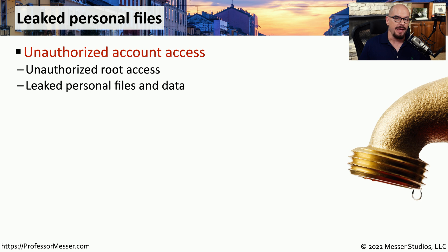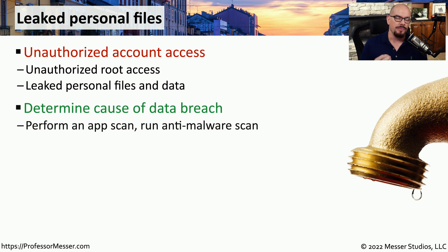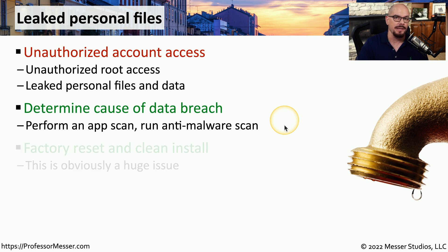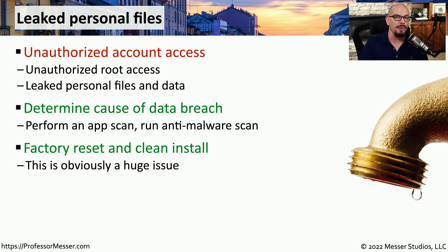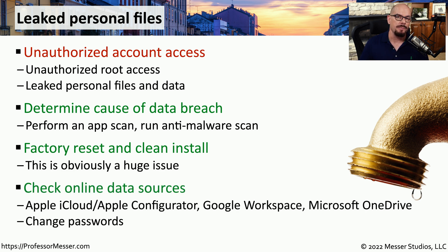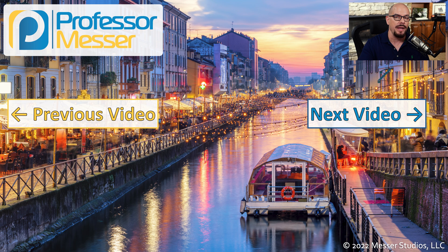One of the things you don't want to have happen is to log on to the internet and find your personal information has been uploaded to a public website. This happens all too often when someone gains unauthorized access to our mobile devices. One of the first things you should do is try to find the source of all of this leaked data — scan your applications and run an anti-malware scan to see if there's additional software running that you weren't expecting. If you believe the data breach occurred from your mobile device, you might want to perform a factory reset and delete everything on that phone so you can restore a known good operating system. You should also check your credentials for Apple iCloud, Google Workspace, Microsoft OneDrive, and any other cloud service that might contain personal information, as the attacker may have gained access to the copy of your data located in the cloud.